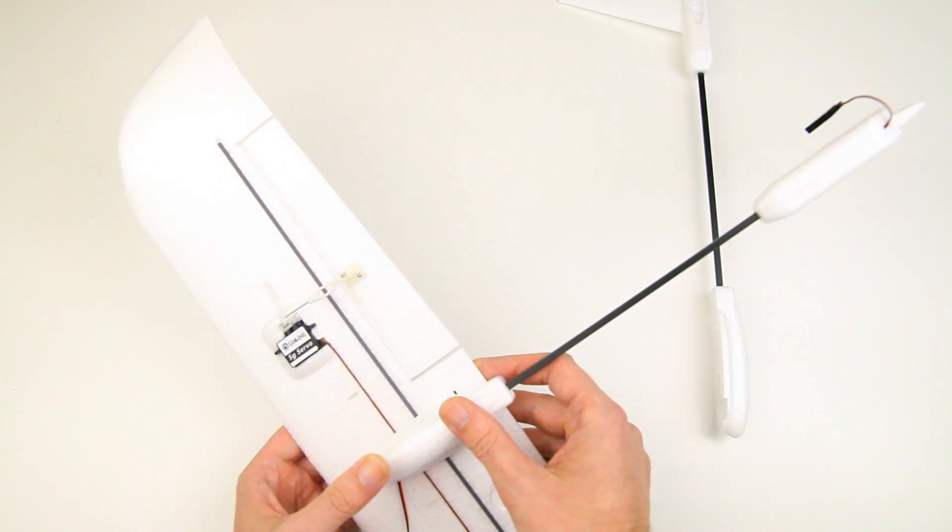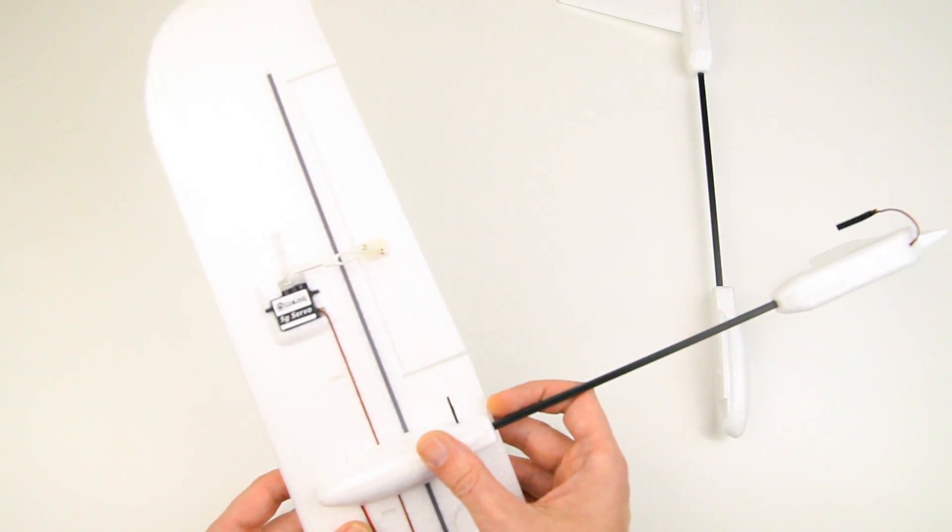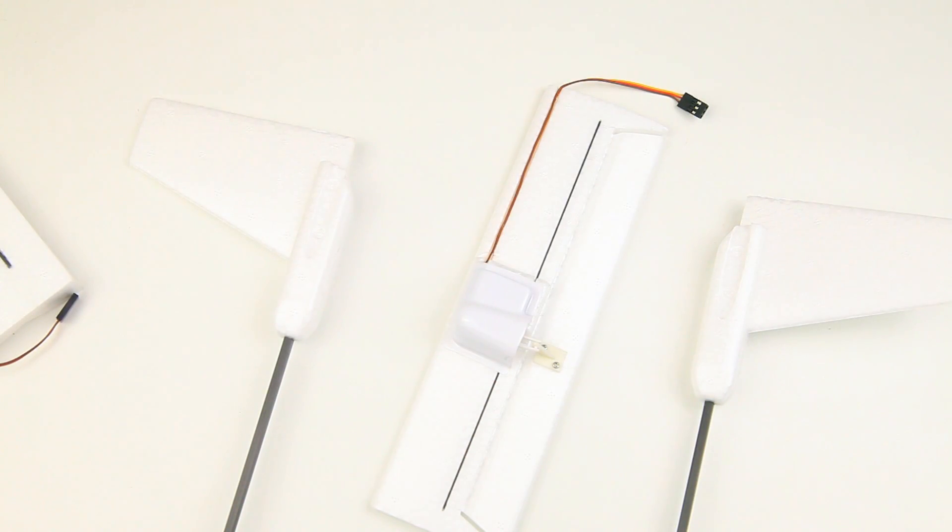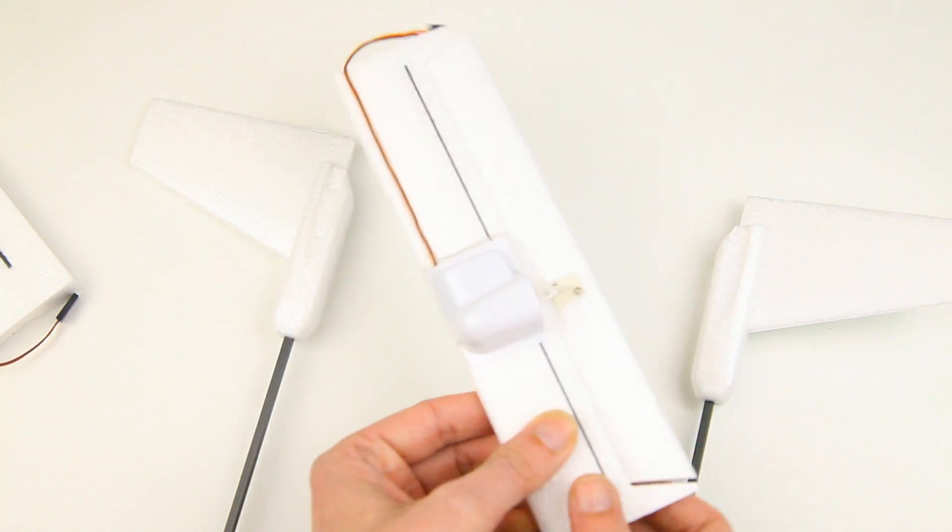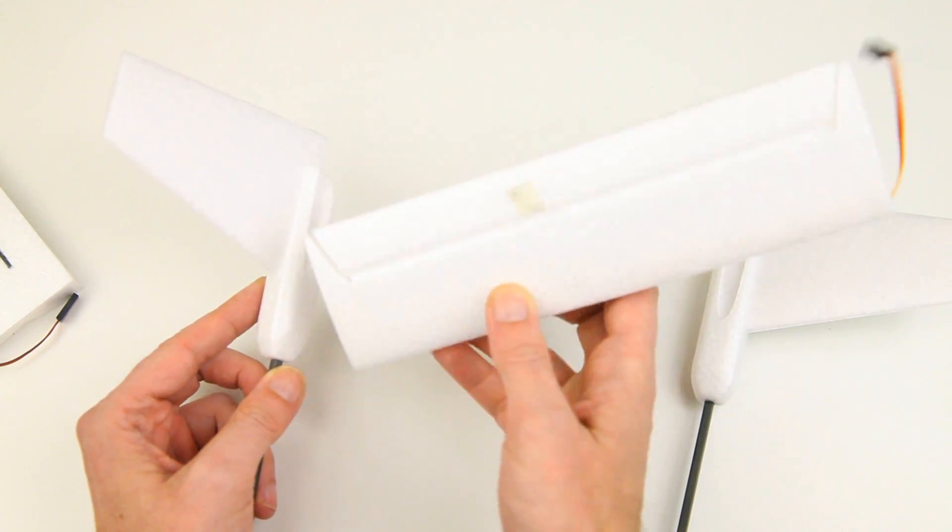For a small little plane you want to keep it as light as possible. Okay, then we have a horizontal stabilizer which also has its servo already in it for the elevator, obviously. There's some carbon reinforcement again, which is nice.